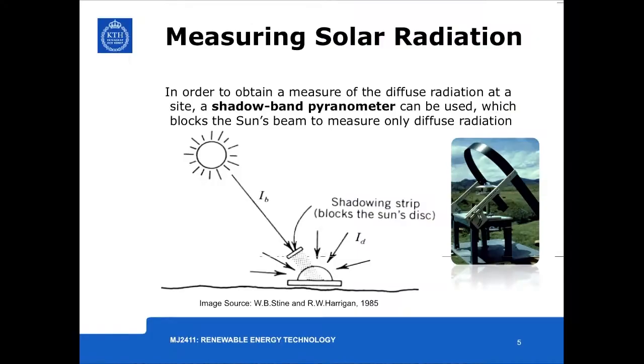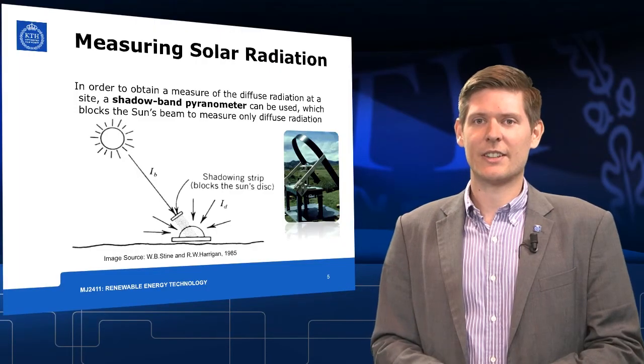In order to obtain the diffuse radiation, we need to modify a pyranometer. In order to measure the diffuse radiation, we attach a shadow band to a pyranometer, which allows us to measure the diffuse radiation.